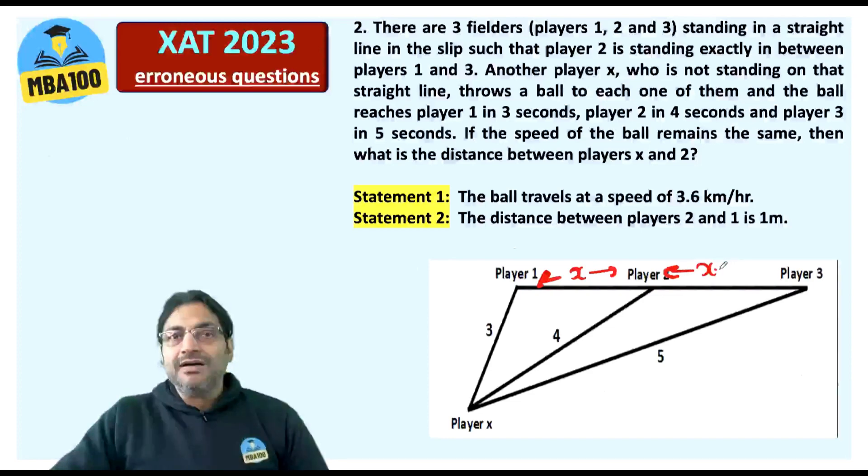So here, if you look at this triangle, the bigger triangle, let's say, let this be X₁₃. I'm sure X₂ is the median. And these sides are in the ratio 3, 4 and 5. 3A, 4A and 5A.